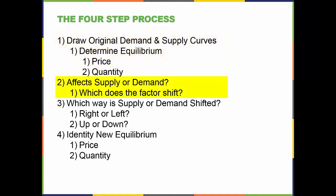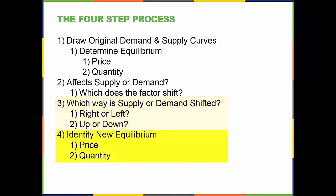Step two: determine if the factor is affecting supply or demand — in other words, which does the factor shift? Step three: determine which way the factor is shifting supply or demand — to the right or to the left, up or down? Step four: identify the new equilibrium, including the new equilibrium price and equilibrium quantity.